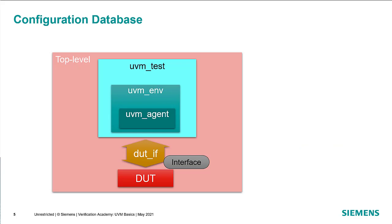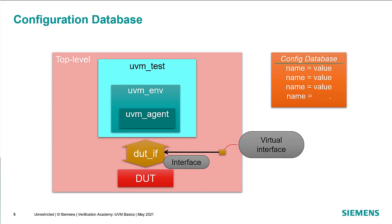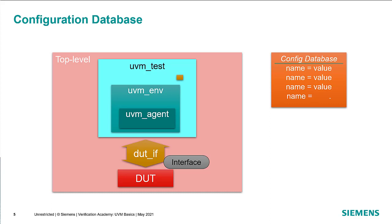The way that we connect the classes in the environment to the DUT is through this interface, and we use what's called a virtual interface. In SystemVerilog, a virtual interface is a pointer to an actual interface object. The way that we communicate it is using the configuration database, which is a series of name-value pairs. From the top-level module, we pass that virtual interface into the configuration database with a name. The test will then get that virtual interface out of the config database, put it in what we refer to as a configuration object, pass that configuration object down to the UVM environment, which will extract that virtual interface and any other configuration information it may need, and pass the virtual interface down to the agent component responsible for communicating at the signal level to the DUT through the actual DUT interface in the top-level module.